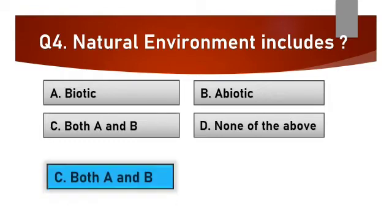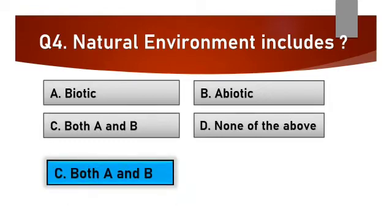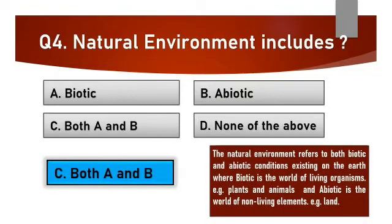Answer is C: Both A and B. The natural environment refers to both biotic and abiotic conditions existing on the earth, where biotic is the world of living organisms, e.g. plants and animals, and abiotic is the world of non-living elements, e.g. land.